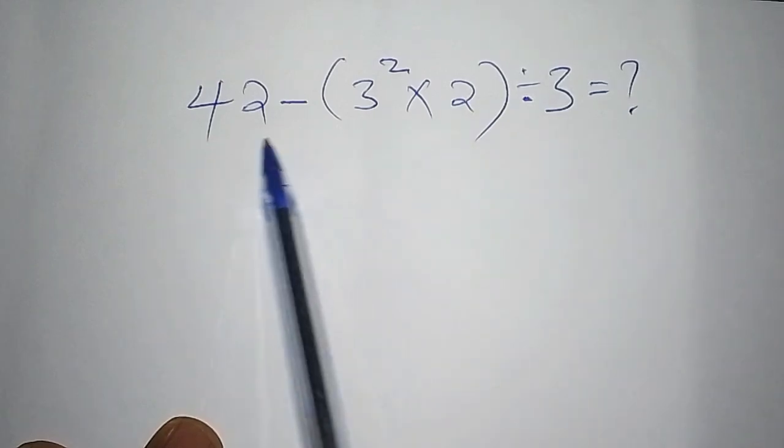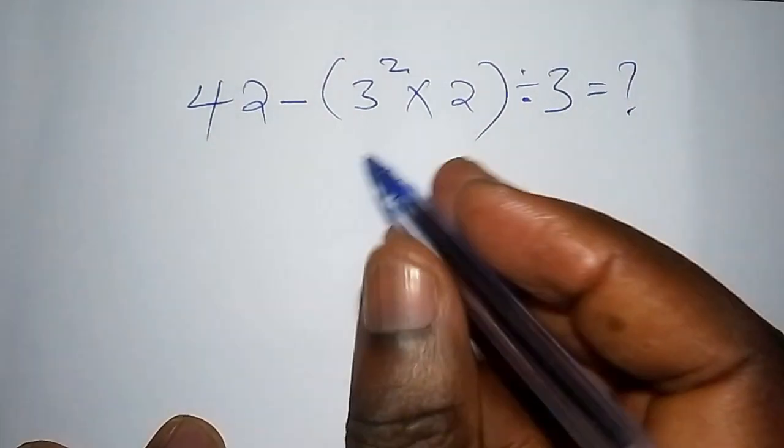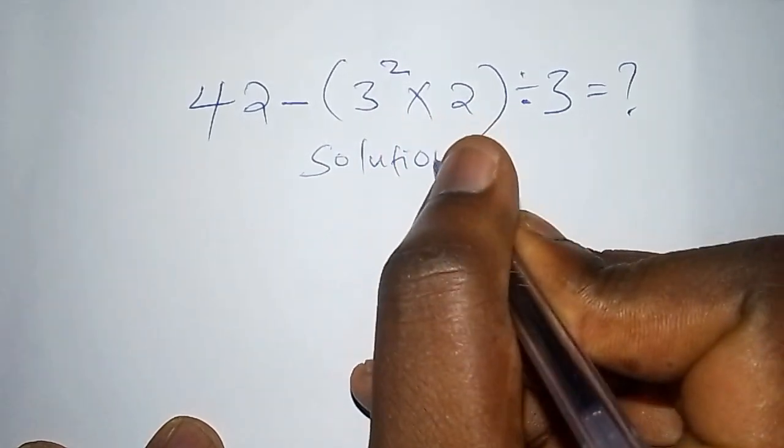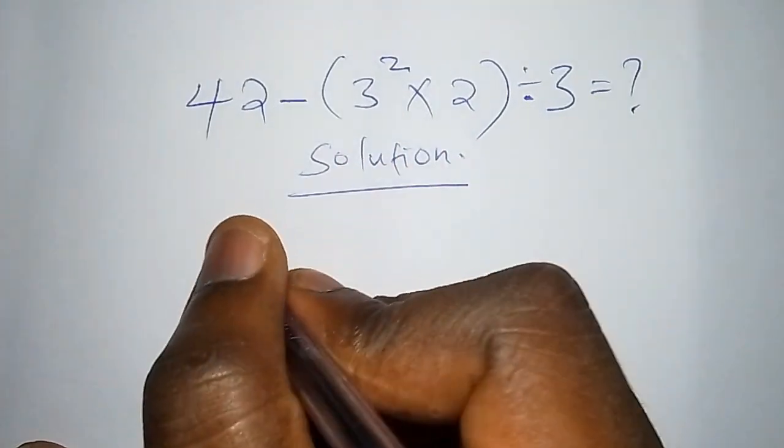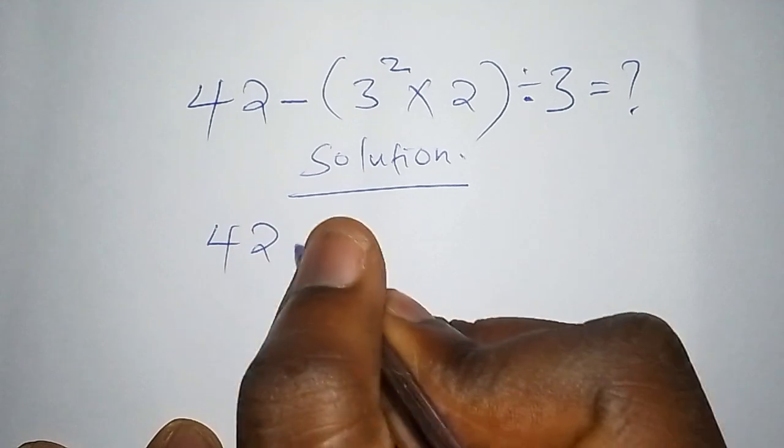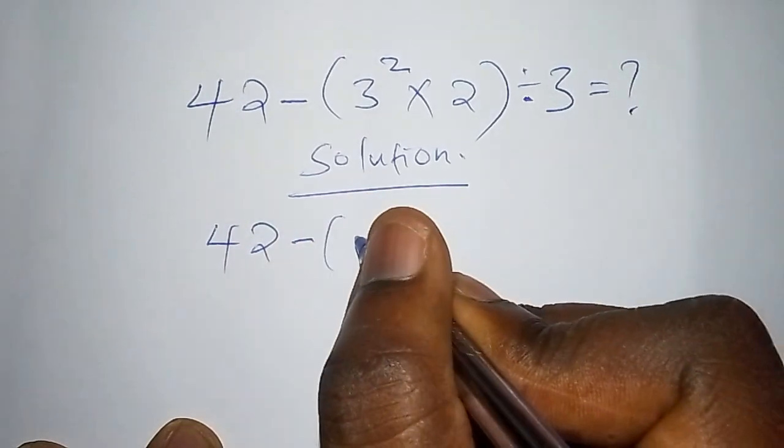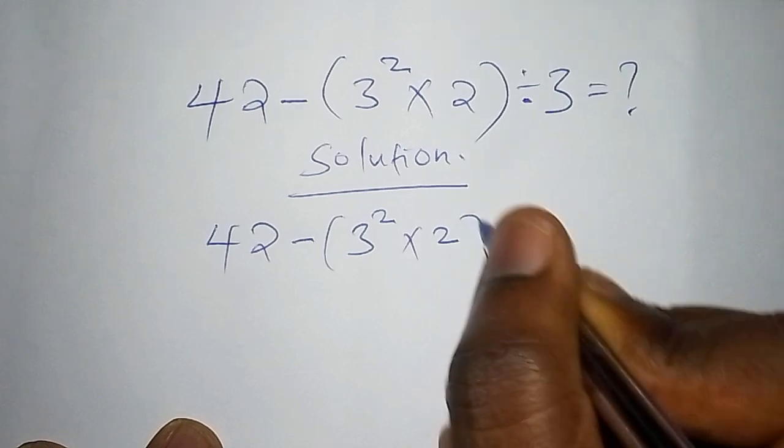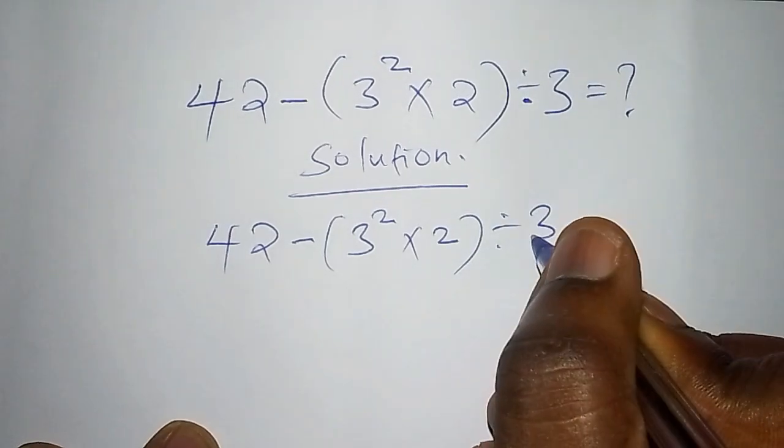Let us kick start. I want us to solve it within the shortest time possible. We are going to begin with the solution. In order for us to work out this maths problem, we are going to say that we are working out 42 subtract from into bracket 3 squared multiply by 2, then close the bracket divide by 3.